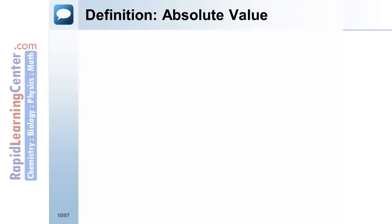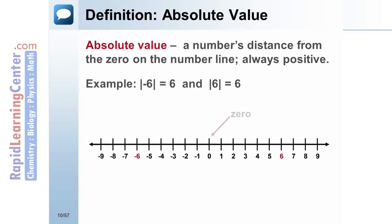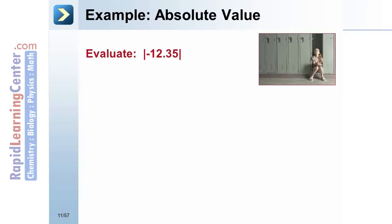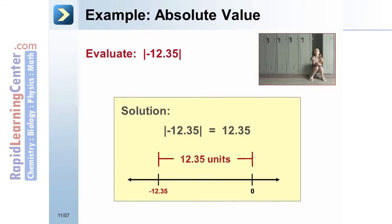Absolute value is a number's distance from the origin, zero. Absolute value is always positive. For example, the absolute value of negative six is six, and the absolute value of six is also six — both numbers are six units from the origin. Example: evaluate the absolute value of negative 12.35. The answer is 12.35, since it is 12.35 units from zero.